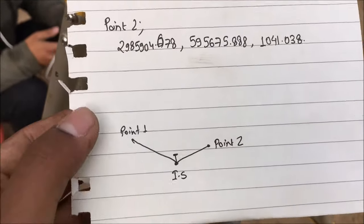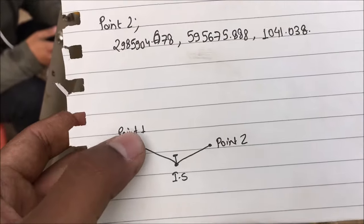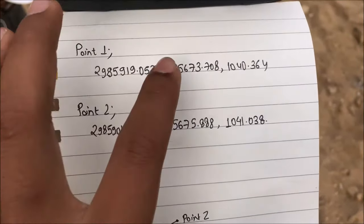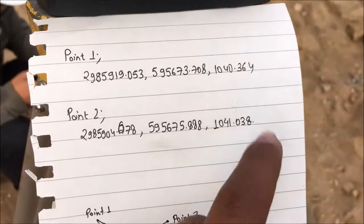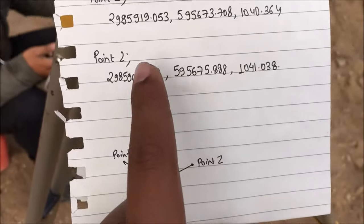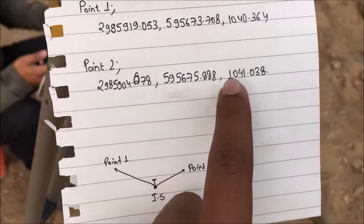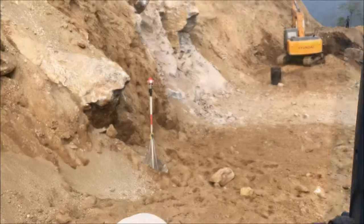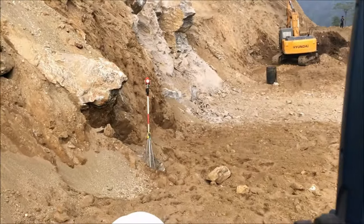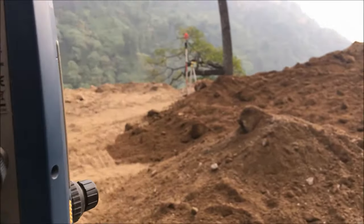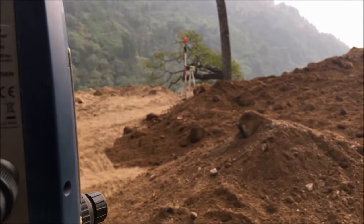Here you can see we have two points — Point 1 and Point 2. These are the coordinates, northing, easting, and elevation of Point 1 and Point 2 respectively. In the field, this is our Point 1 and this is Point 2.